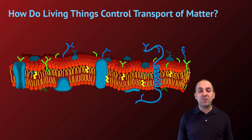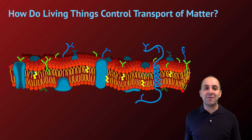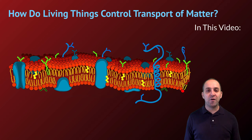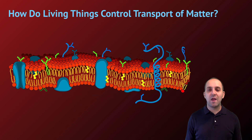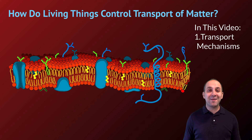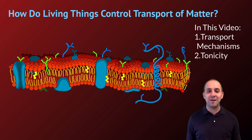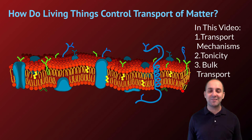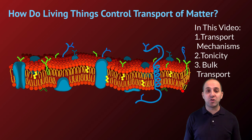The question we're trying to answer in this video is: how do living things control the transport of matter? We're going to talk about mechanisms of cellular transport, then we'll talk about tonicity, and finally we'll talk a little bit about bulk transport. All of this is going to involve the star of the show — the cell membrane.